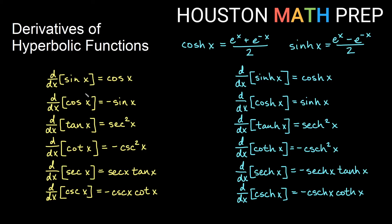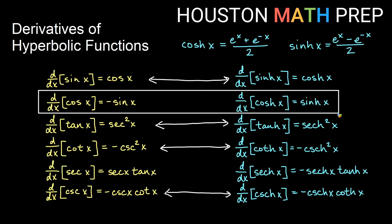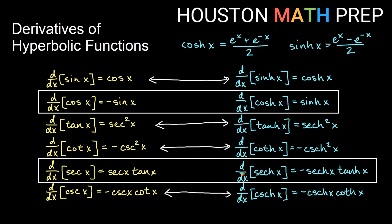Here we have side by side a list of the circular derivatives and the hyperbolic derivatives for these functions. You'll notice that some of these match up exactly. For example, the derivative of sin is cosine and the derivative of sinh is cosh. The derivative of tangent is secant squared — same thing for hyperbolic tangent and hyperbolic secant squared. The cotangent definition matches exactly, and the cosecant and hyperbolic cosecant pair up nicely as well. The only two that are different: the derivative of cosine is negative sine, but the derivative of cosh is positive sinh. Also, the derivative of secant is secant tangent, while the derivative of hyperbolic secant is negative hyperbolic secant times hyperbolic tangent.